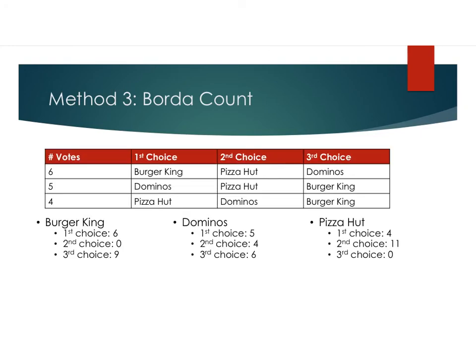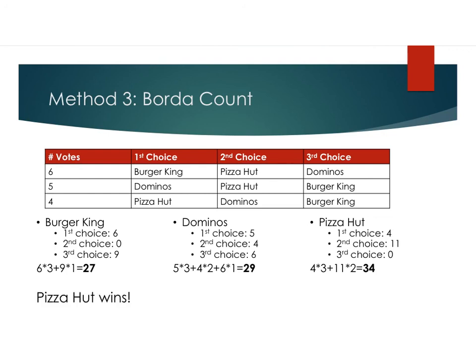Going back to our scenario: Burger King has six first-choice votes, no second-choice votes, and nine third-choice votes. This gives us six times three plus nine times one, or 27 points for Burger King. Domino's has five first-choice votes, four second-choice votes, and six third-choice votes, for a total of 29 points, because five times three plus four times two plus six times one equals 29. And finally, Pizza Hut had four first-choice votes, eleven second-choice votes, and zero third-choice votes, giving us four times three plus eleven times two equals 34 points. So we see that Pizza Hut wins.